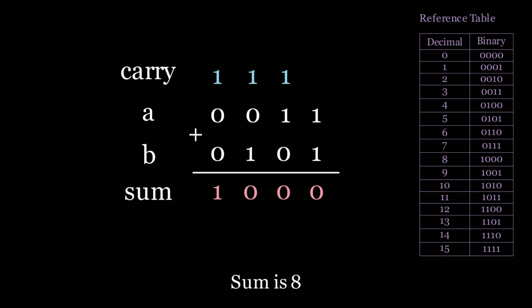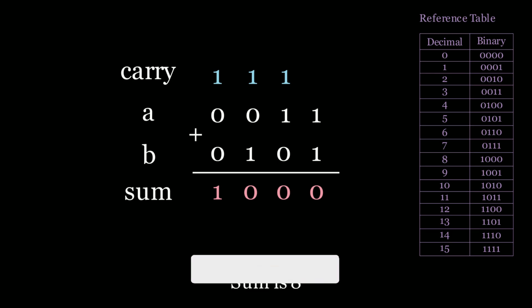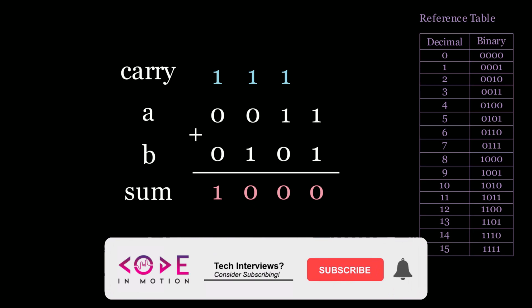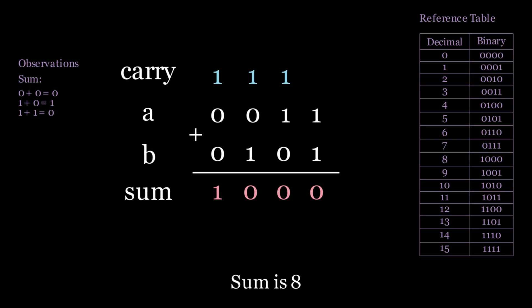Since we can't use addition or subtraction, we need bitwise operations. Let's analyze the sum: zero XOR zero is zero, one XOR zero is one, and one XOR one is zero — which matches our binary sum behavior. So the sum is the XOR operator.